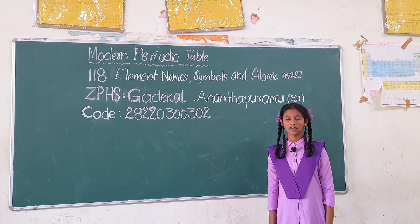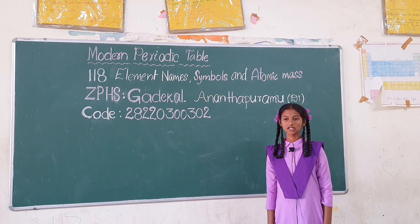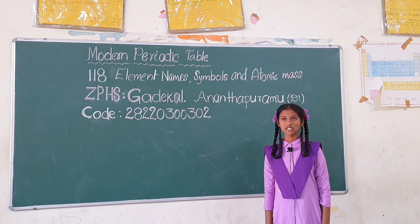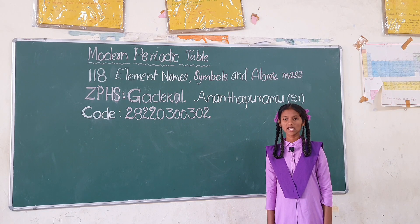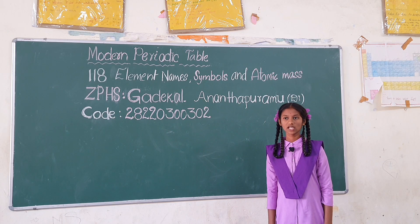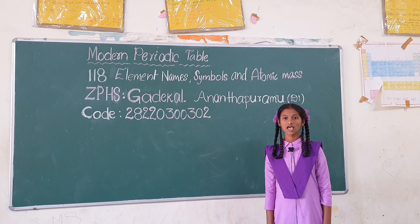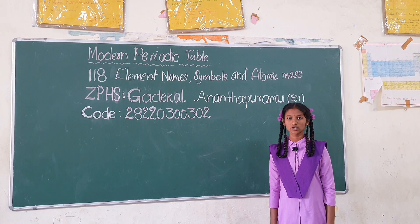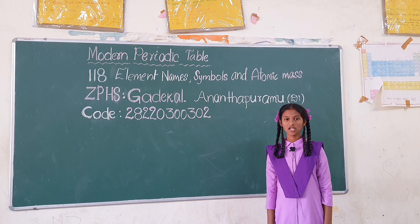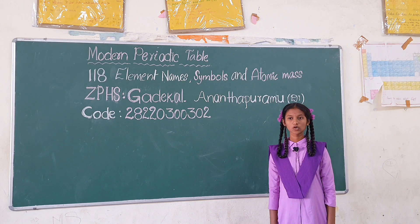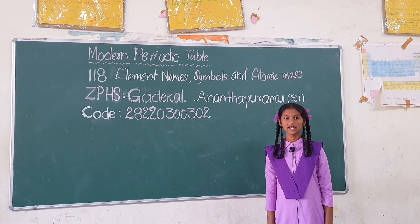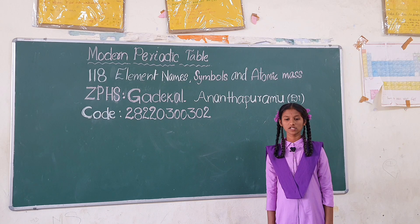Copper Cu 63.55, Zinc Zn 65.39, Gallium Ga 69.72, Germanium Ge 72.69, Arsenic As 74.92, Selenium Se 78.96, Bromine Br 79.90, Krypton Kr 83.79.